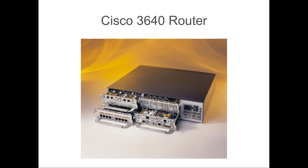For example, the 3640 router is an older router but one that you can use in GNS3, and all of its modules are supported. So you can use Fast Ethernet links, Gigabit, serial links — basically everything you need for the Route exam.